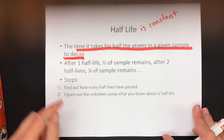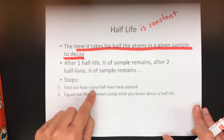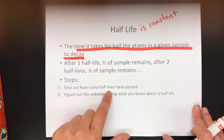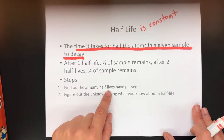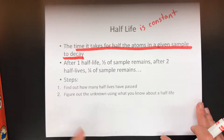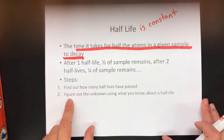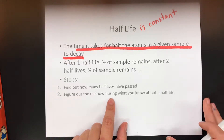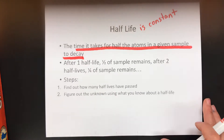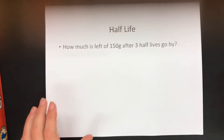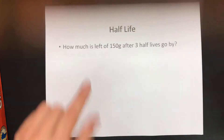Step one: you have to find out how many half-lives have passed. The problem most likely is not going to say 'three half-lives have passed' — you have to figure it out using the numbers given to you. Step two: you have to actually answer the problem and figure out the unknown of whatever the question is asking, using what you know about a half-life. So here we go — this video is all examples.